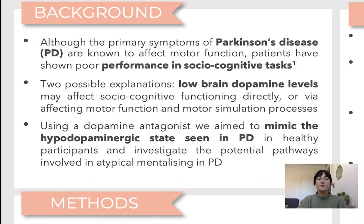There are two ways in which the low brain dopamine level seen in Parkinson's can affect social cognitive function. On one hand, dopamine loss could affect social cognition directly through an under-concentration of dopamine in the prefrontal areas recruited in tasks of theory of mind.